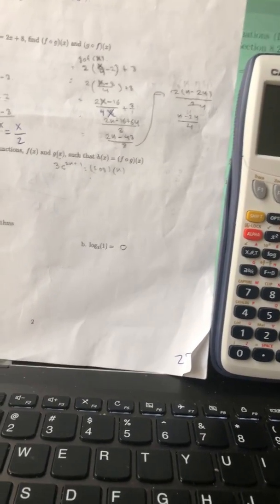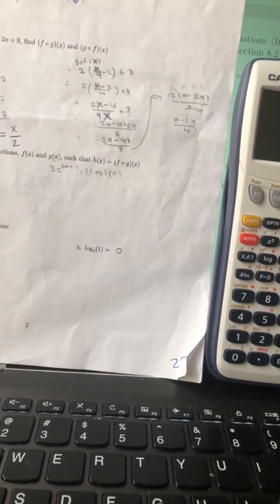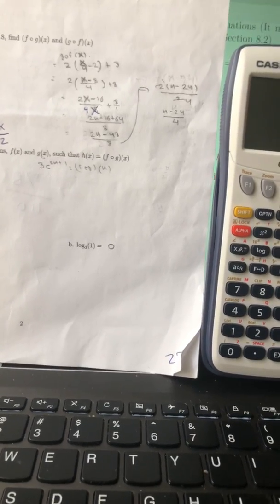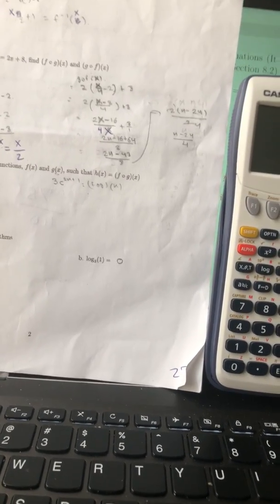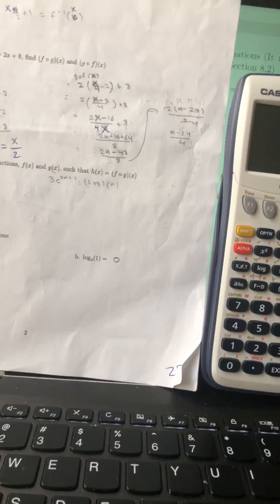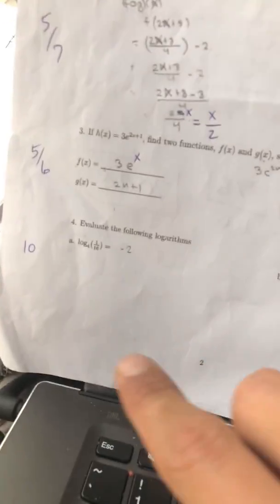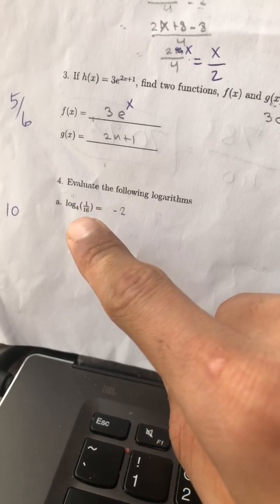Okay guys, today we are going to change the log base in a calculator. It's a Casio FX-9750GII, and for this demonstration, we have a question: log to the base 4.